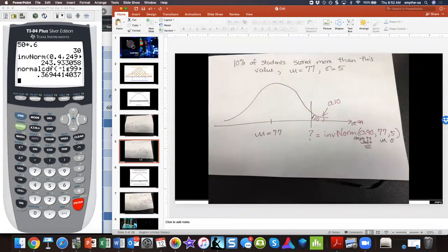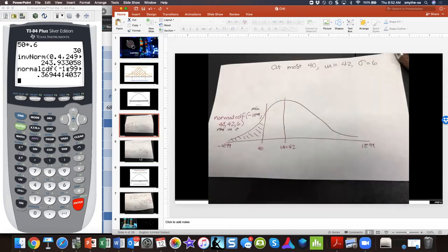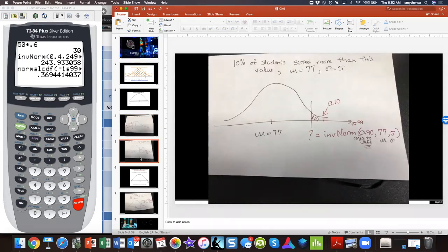For this one, it says 10% of students scored more than this value, and so we're told that this 10% are more than this value. We want to know what this value is, and the value itself would get labeled below the belt. By the way, if we go back to this problem, the thing that we want to find is this area, because area equals probability, and that's above the belt. So that's why this is normal. But then this one is inverse norm because we've labeled this one below the belt, because we want to find this value that 10% are scoring more than.